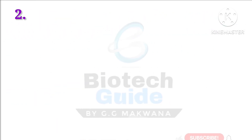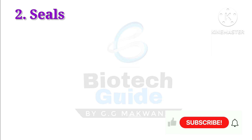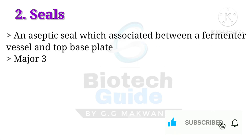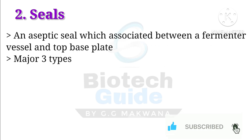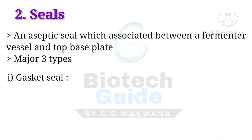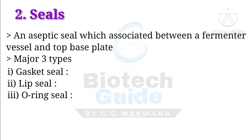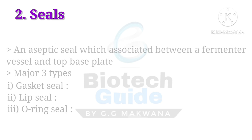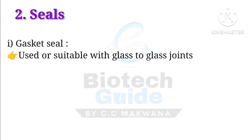The second part is seals. A seal is a part associated between the fermenter vessel and the top base plate. Mainly three types are there: first is a glass gasket seal, second is a lip seal, and third is an O-ring seal.